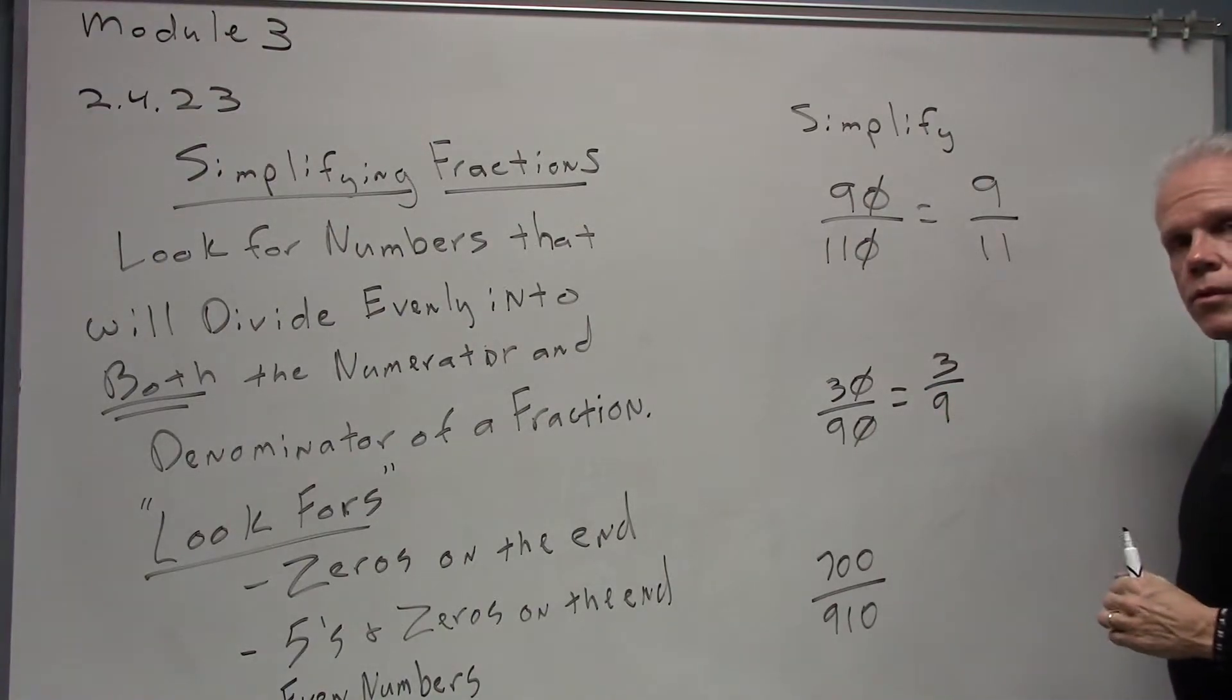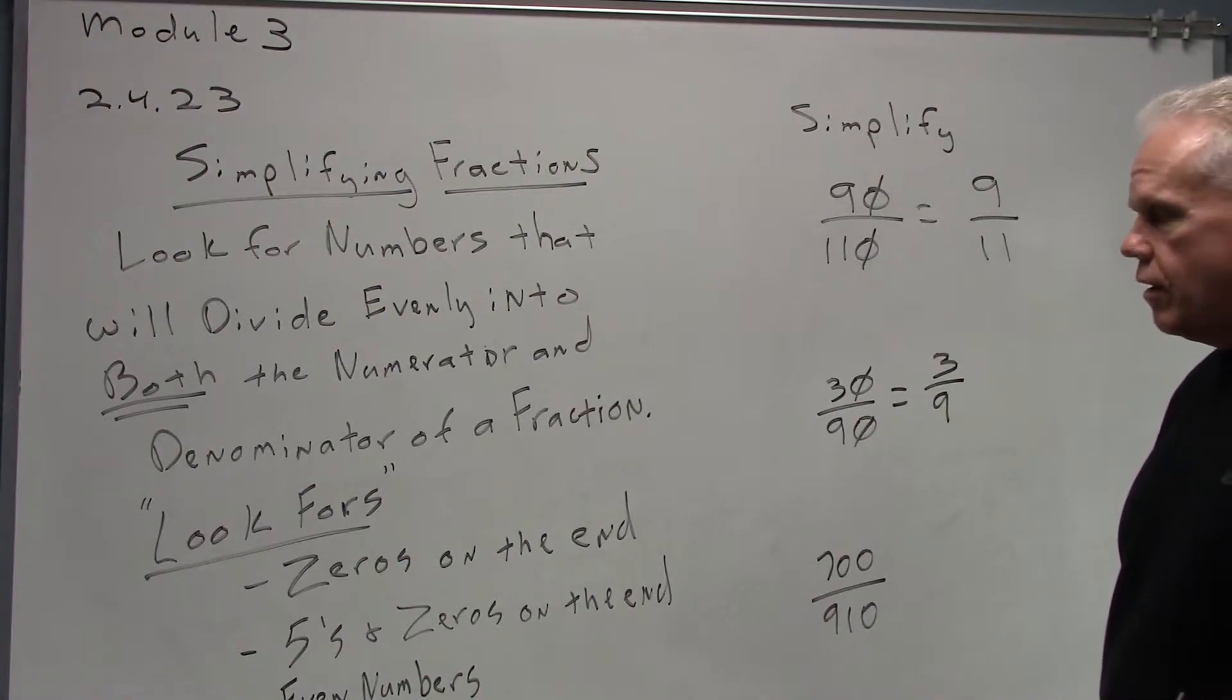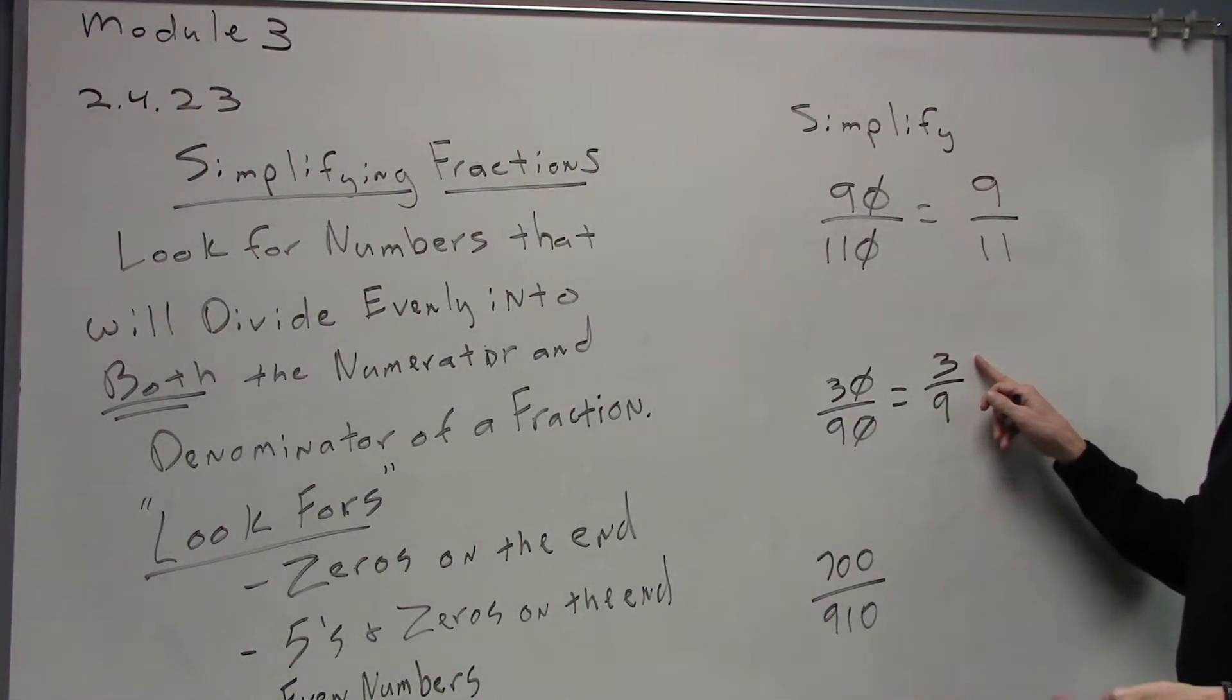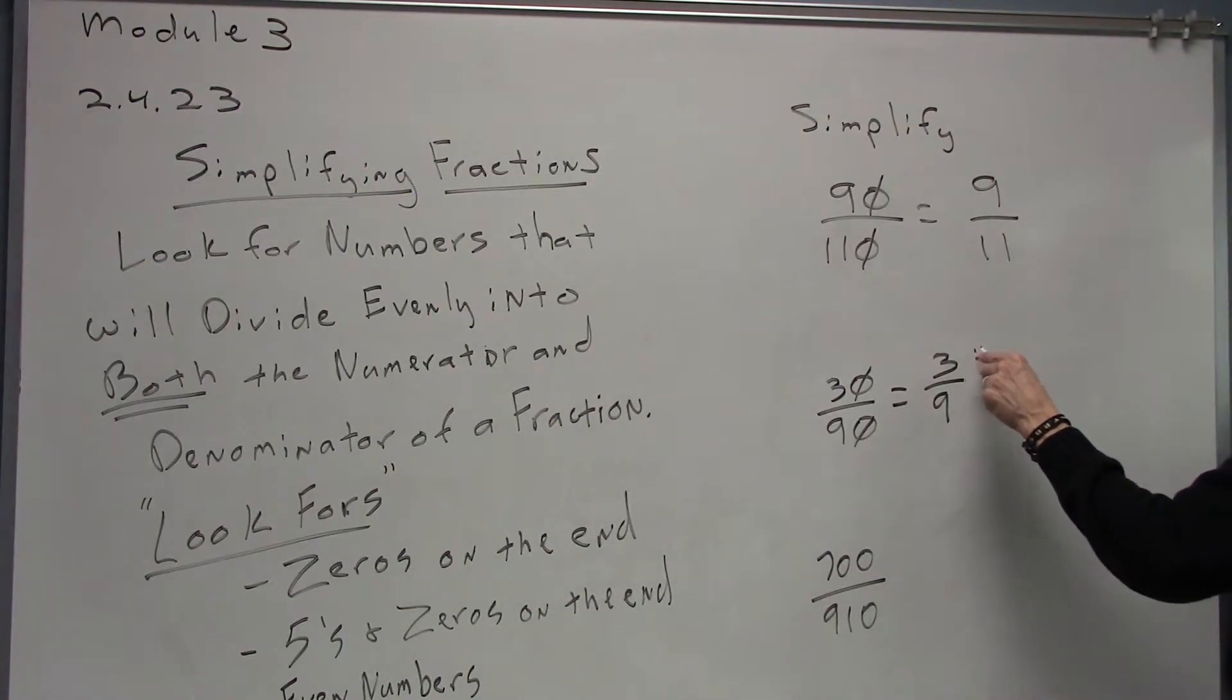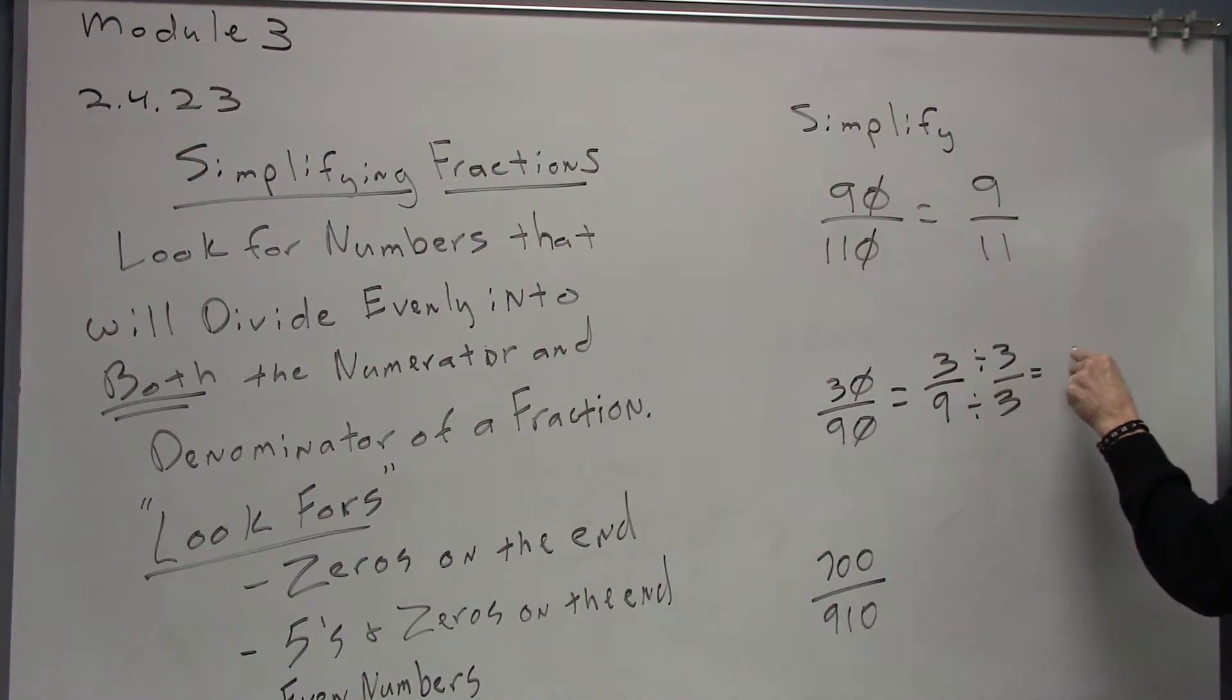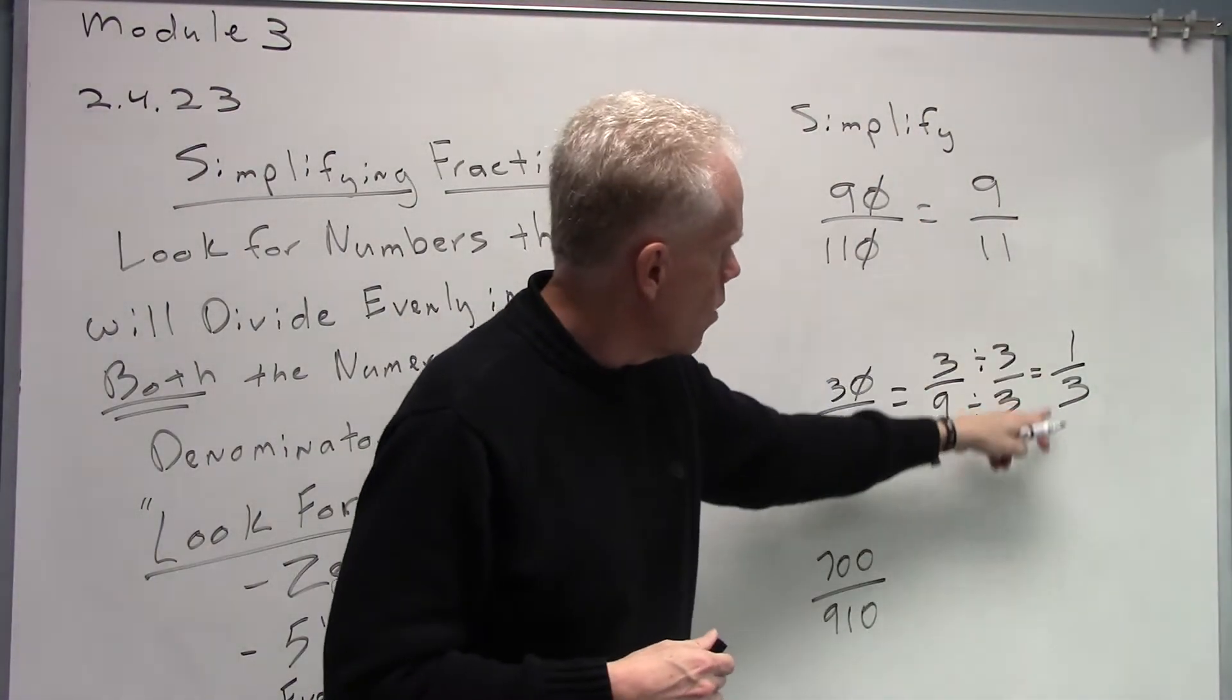At this point with 3 over 9, we should notice that there's more we can do. A 3 will actually go into 3 and 3 will also go into 9. When we divide this by 3 and divide the bottom by 3, what we'll end up with is 1 third. So, 30 over 90 ends up being 1 third.